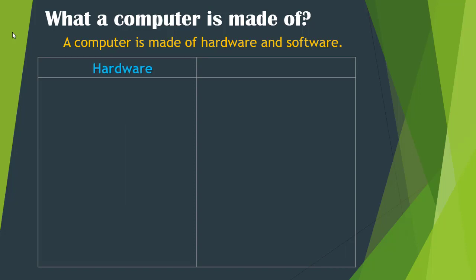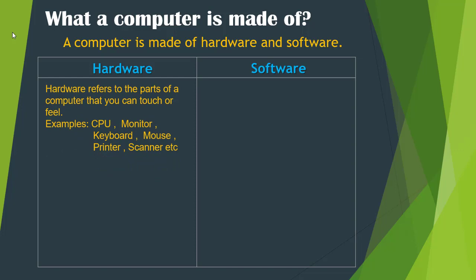Let's see the definition of hardware and software in detail with examples. Hardware refers to the parts of a computer that you can touch or feel — parts you can hold in your hand. Examples are: CPU, Monitor, Keyboard, Mouse, Printer, Scanner, Camera, Microphone, Speakers, and Headphones. These are all computer hardware.